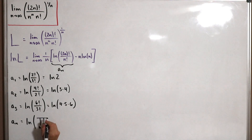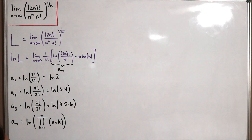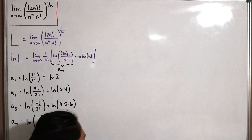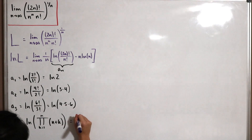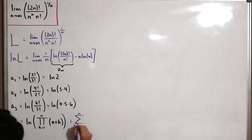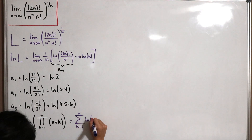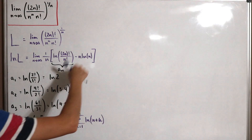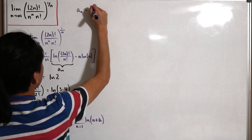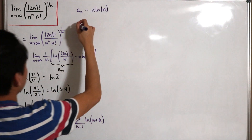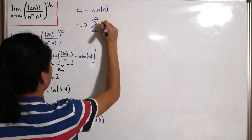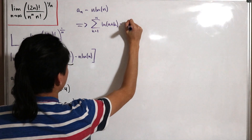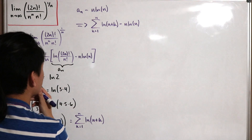Specifically, a_n equals the natural log of the product from k=1 to n of (n+k). Using the log of a product rule, this converts into a summation: a_n equals the partial sum from k=1 to n of ln(n+k). Substituting back, we have the sum from k=1 to n of ln(n+k), minus n·ln(n).